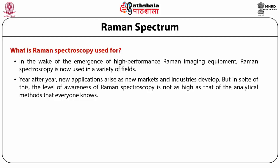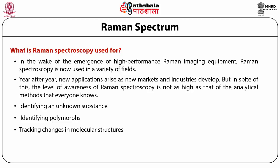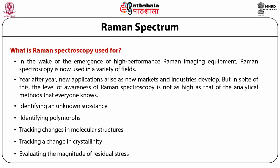What are we using it for? Number one is identifying an unknown substance. Number two is identifying polymorphous compounds, then tracking changes in molecular structures, tracking changes in crystallinity, and evaluating the magnitude of residual stress. One very important application is that changing molecular structures can be tracked very conveniently with the help of Raman spectroscopy.